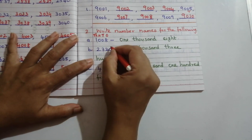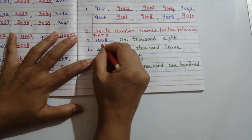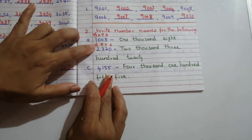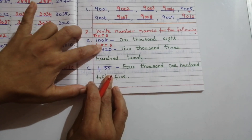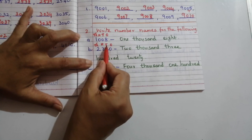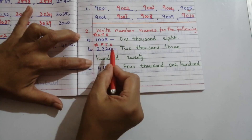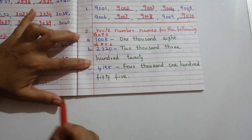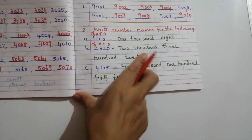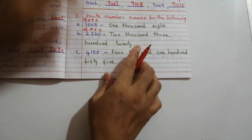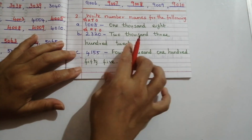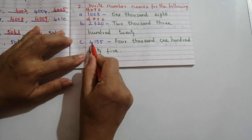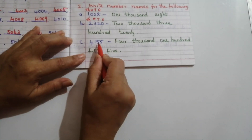Problem B: 2320 — thousands place is 2, hundreds place is 3 (three hundred), tens place is 2 (twenty), ones is 0 — so we write 'two thousand three hundred and twenty.' Problem C: 4155 — similarly, write 'four thousand one hundred and fifty-five.'